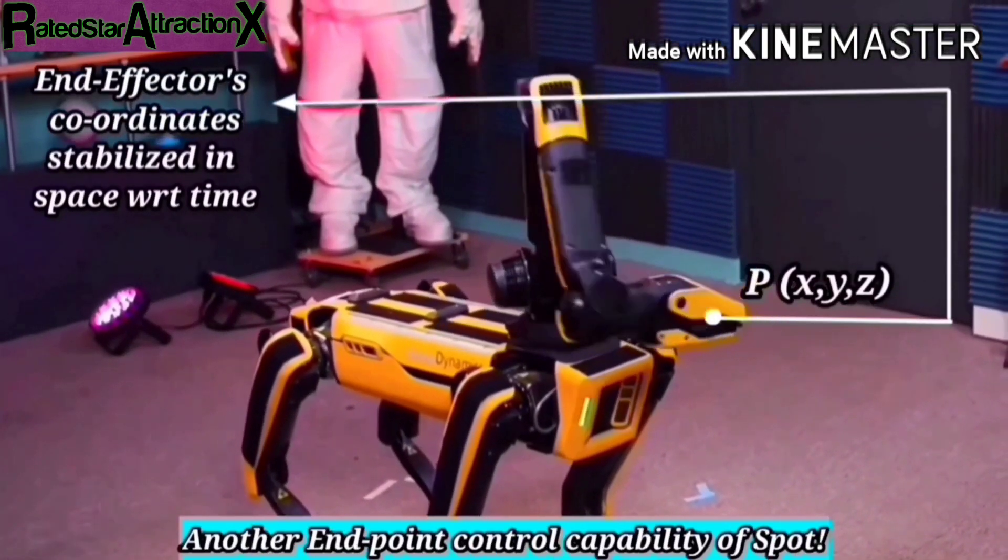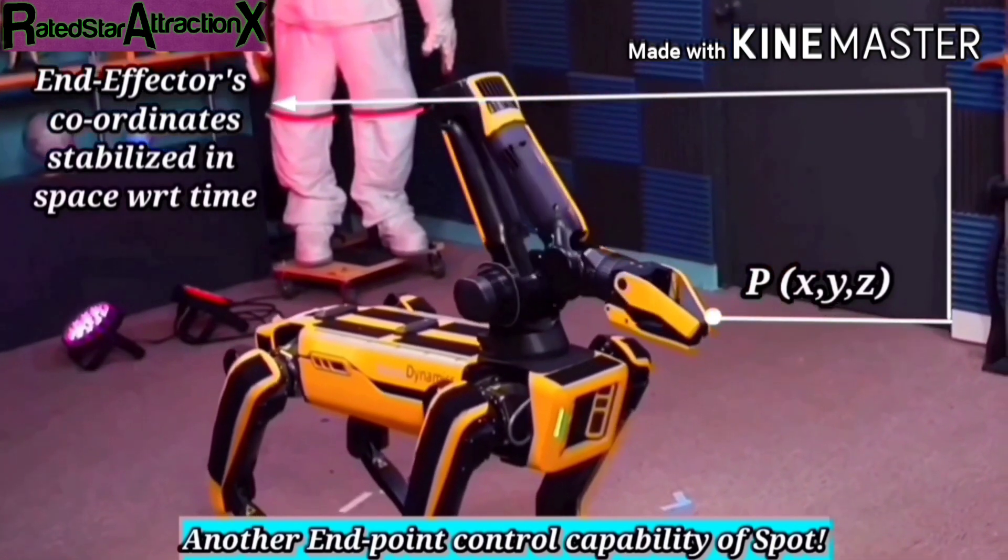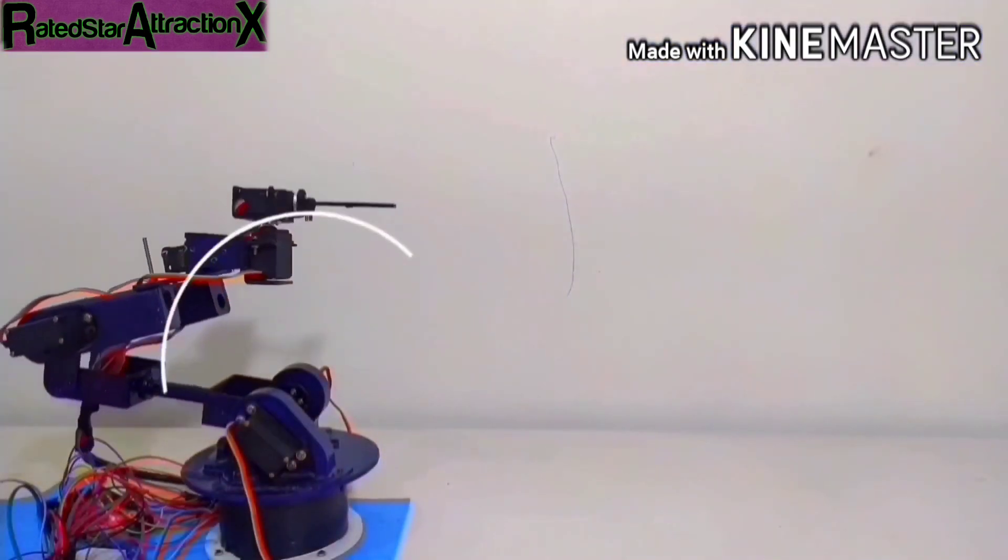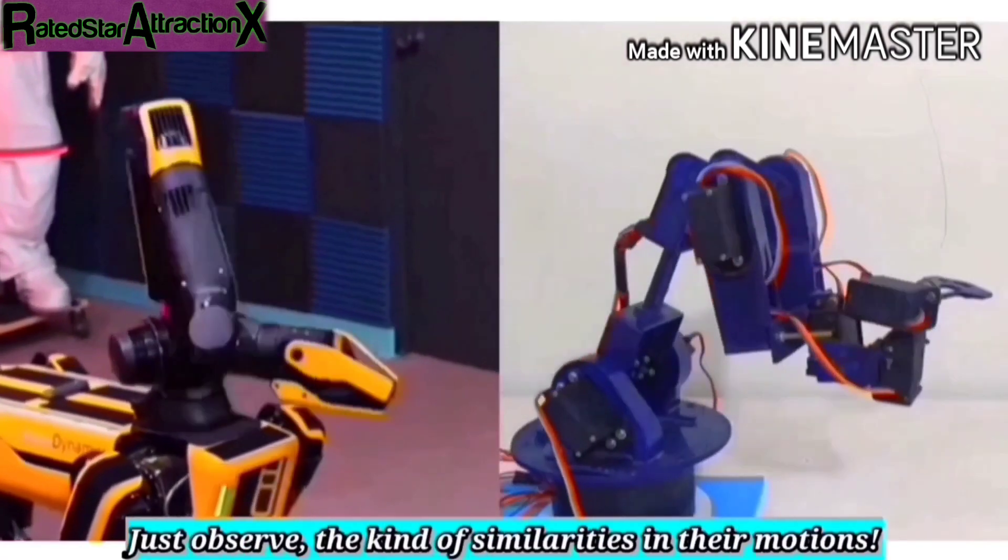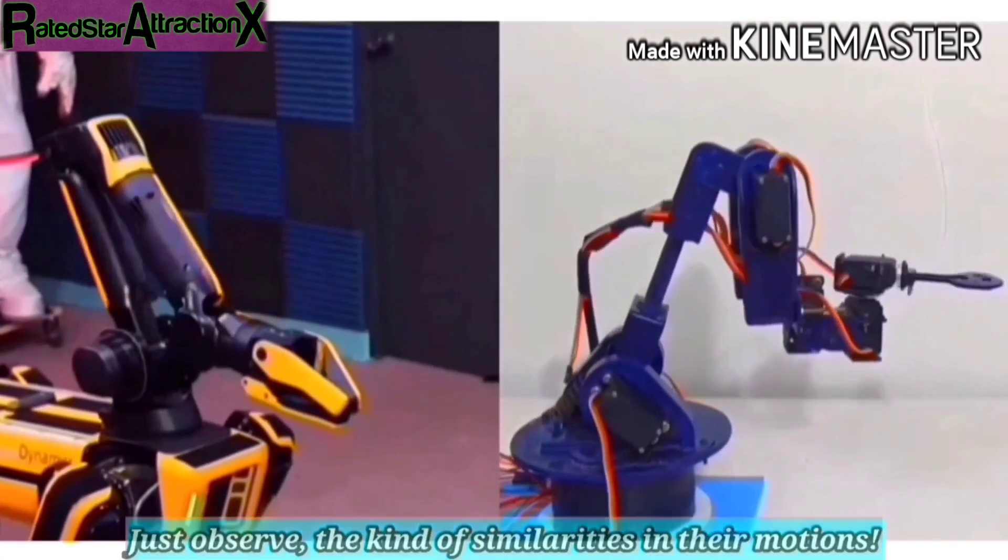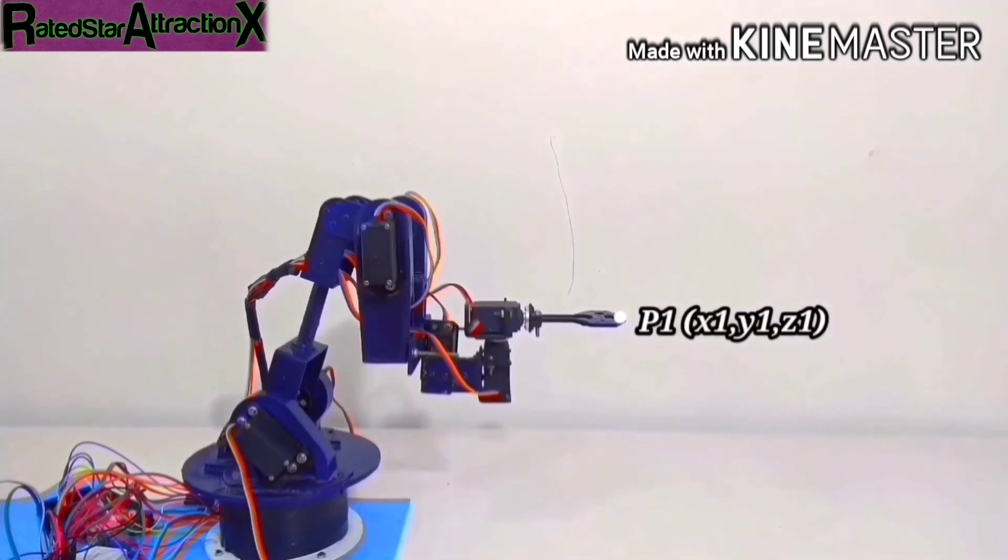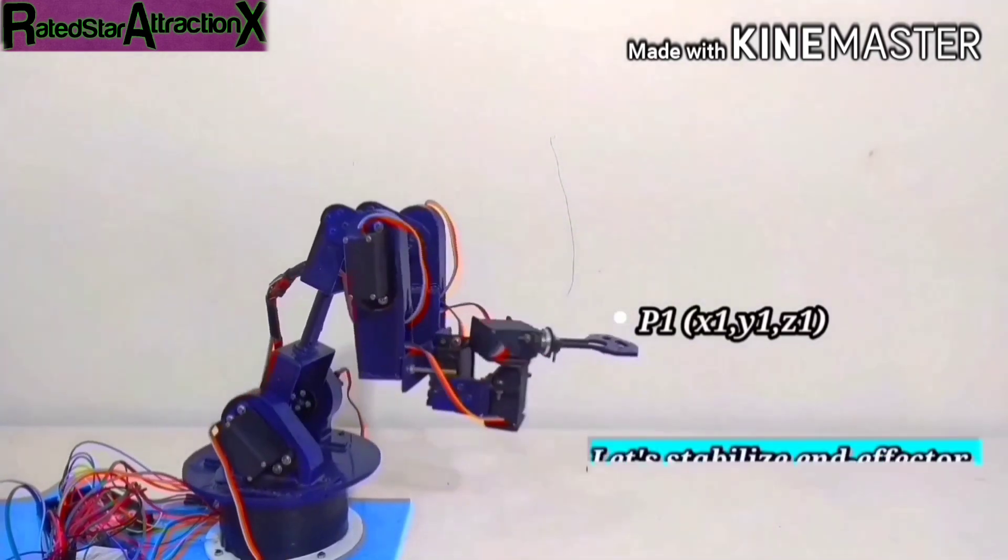This is another endpoint control that Spot can do. Inspired from Spot, this arm can also do the same thing. Just observe how similar they were in terms of motion planning, and the basic algorithms are pretty similar to that of the previous endpoint control.